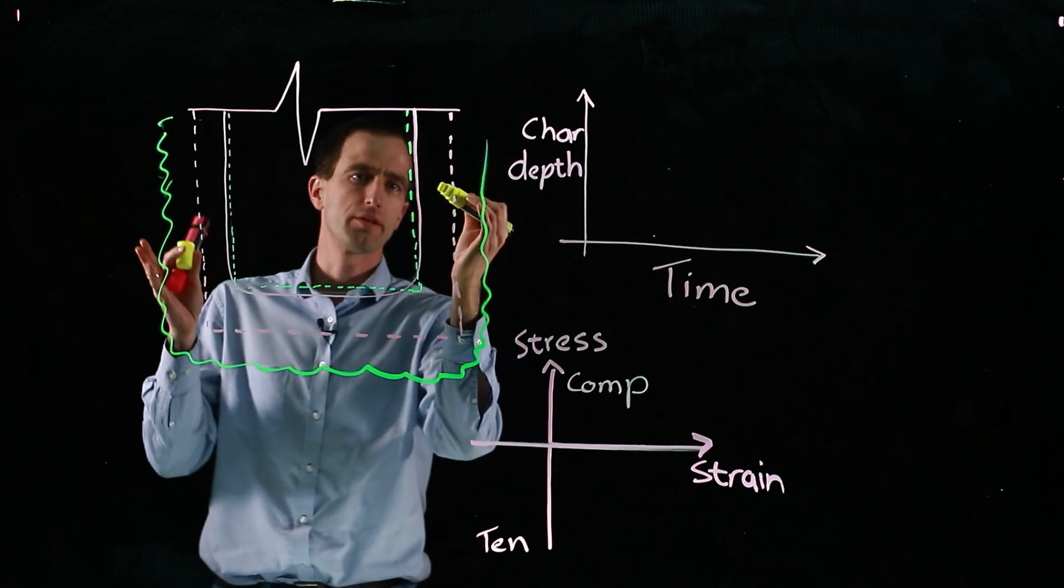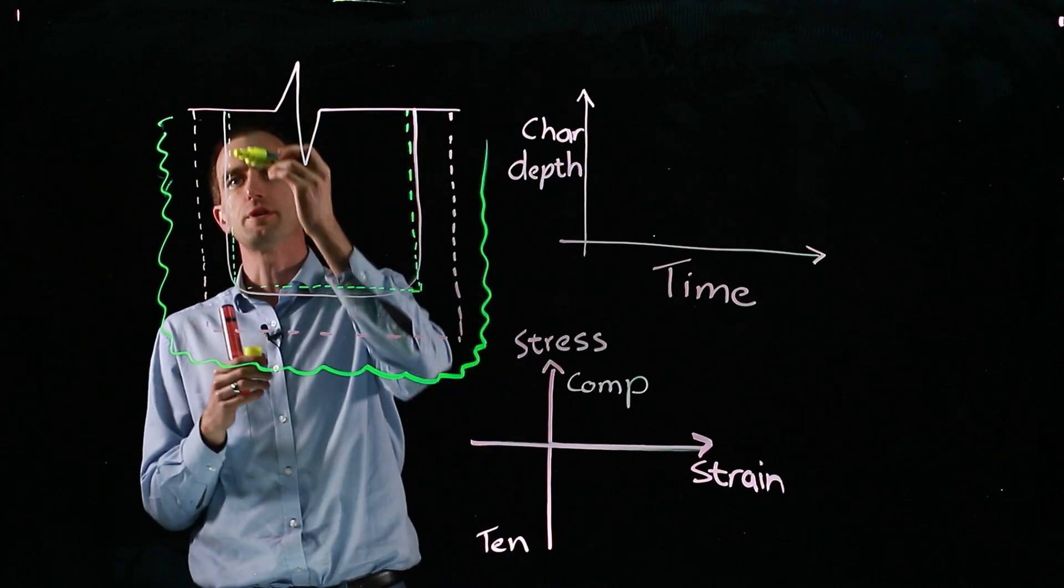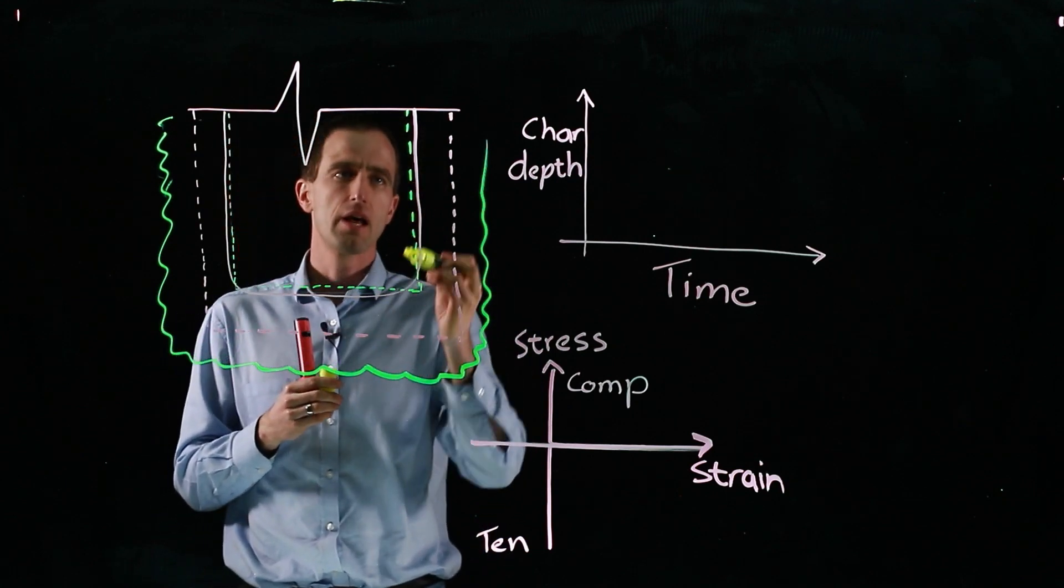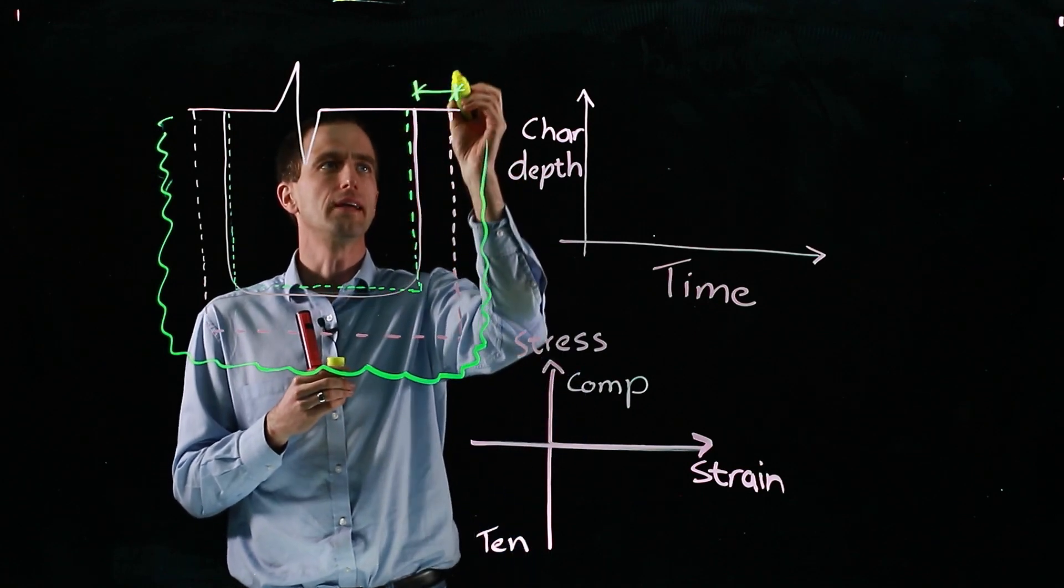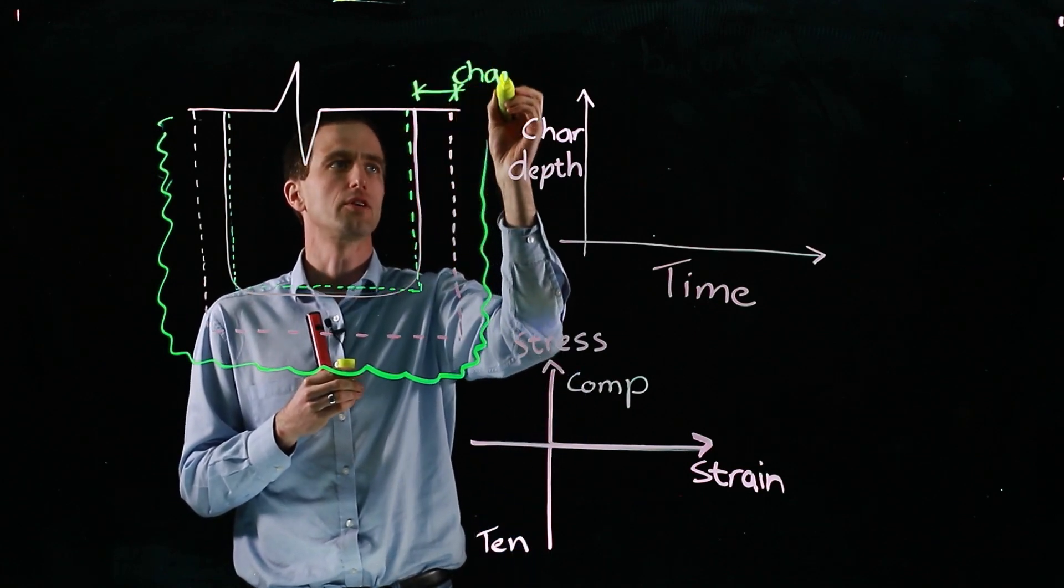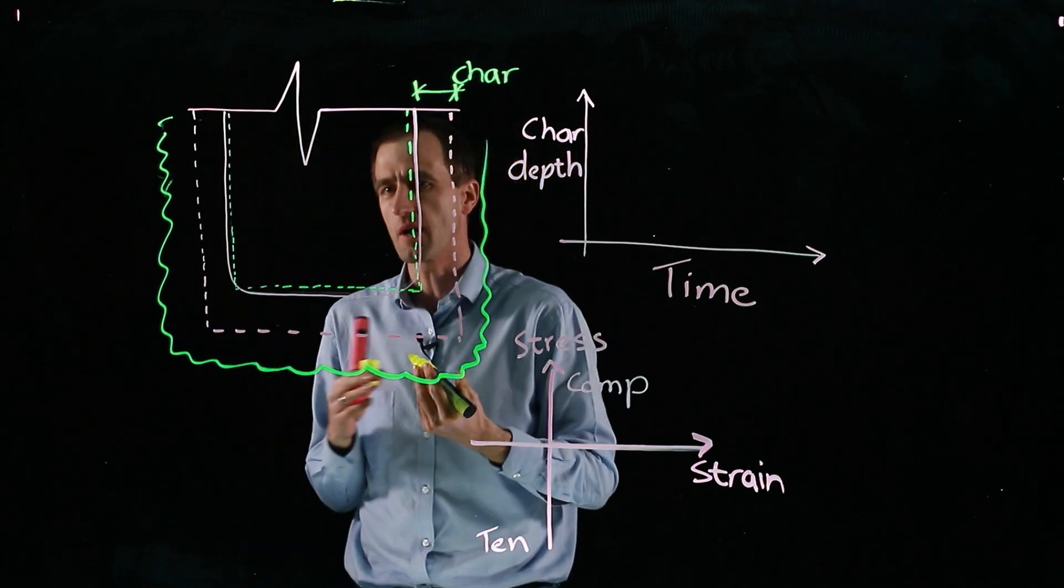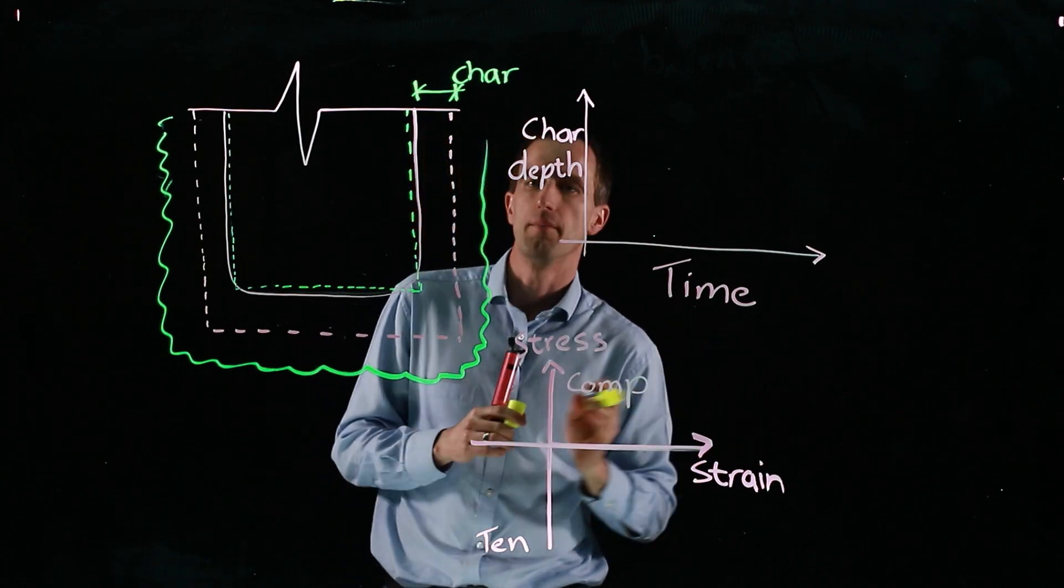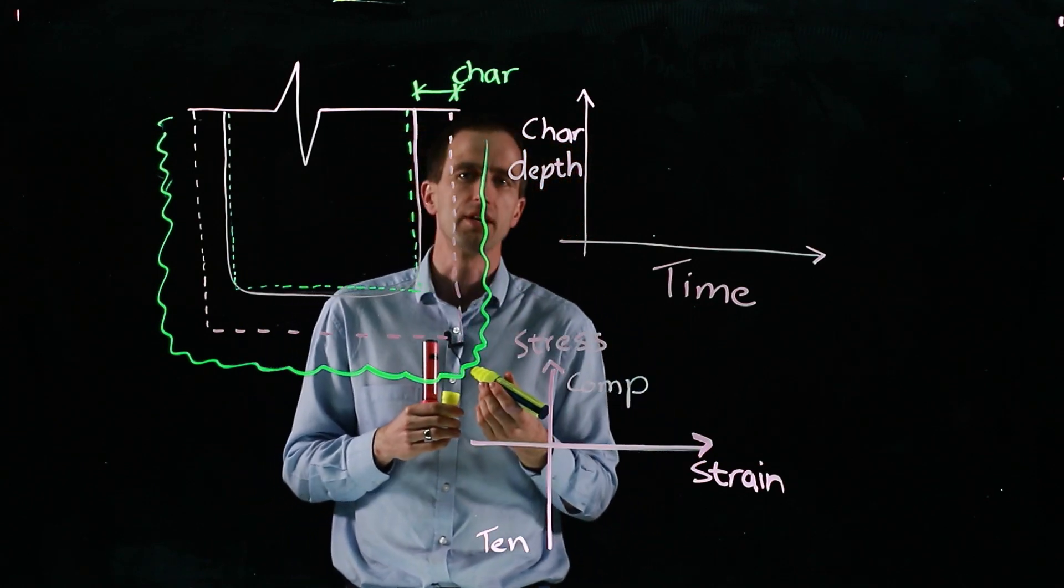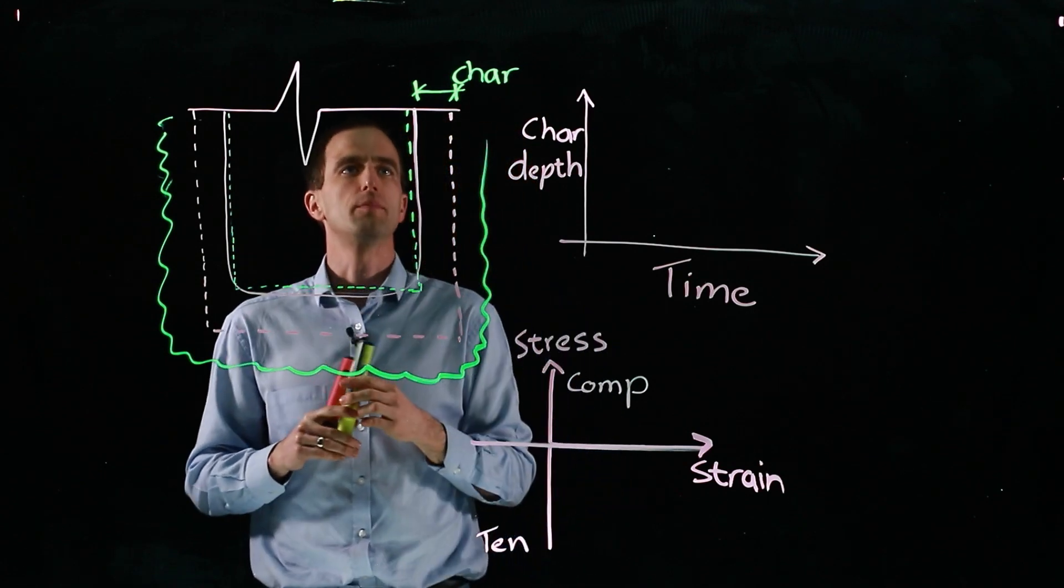And the char then progresses and it gets deeper and deeper. And so after a period of time, it'll reach this solid pink line here. That'll be our char depth. So we have a char depth that occurs. And depending on what species of timber, it might be somewhere between 0.5 millimeters per minute and 0.9, up or down based on various different factors. So our char is going to develop into the section.